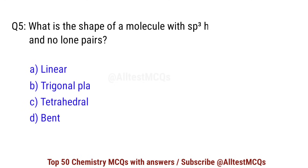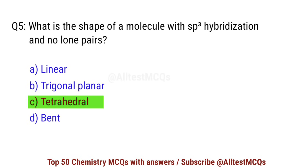Question number 5. What is the shape of a molecule with sp3 hybridization and no lone pairs? Right option is C: tetrahedral.